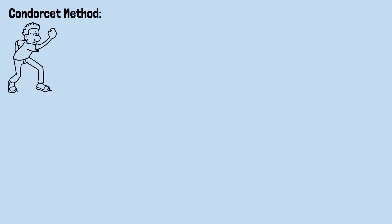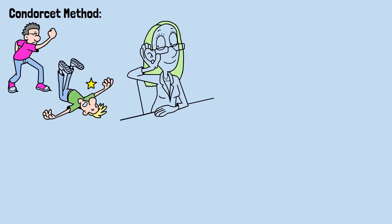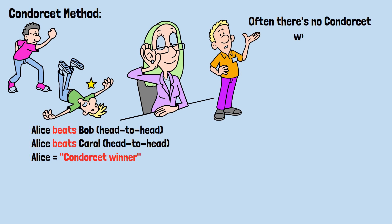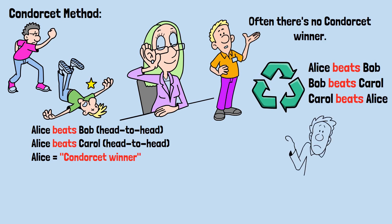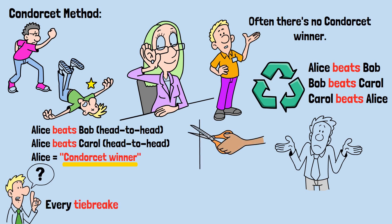The Condorcet method finds the candidate who would beat every other candidate in head-to-head matchups. If Alice beats Bob head-to-head and Alice beats Carol head-to-head, then Alice is the Condorcet winner. Problem: often there's no Condorcet winner — you can get cycles. Alice beats Bob, Bob beats Carol, Carol beats Alice. Rock, paper, scissors — no clear winner. In cases with no Condorcet winner, you have to use a tiebreaker method, and every tiebreaker method violates independence of irrelevant alternatives.